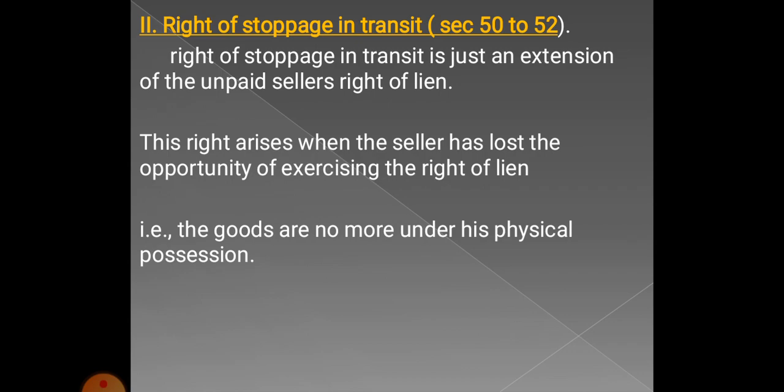The right of stoppage in transit begins when the right of lien ends. The right of stoppage in transit arises when the seller has lost the opportunity of exercising the right of lien. If he fails to exercise the right of lien initially, then this right arises — that is, the right of stoppage in transit.